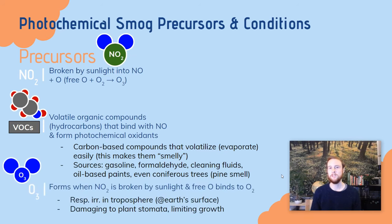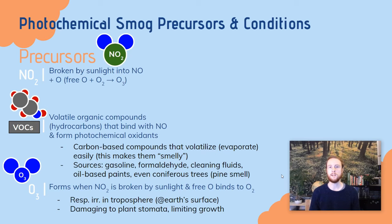The last ingredient we need to form smog is ozone. This is a secondary air pollutant — it's formed when nitrogen dioxide is broken down by sunlight, and that free oxygen that's removed binds with O₂. We should know that in the troposphere down near Earth, ozone is a respiratory irritant to humans, and it can also damage plant stomata — the pores they use to take in carbon dioxide — which can limit plant growth.